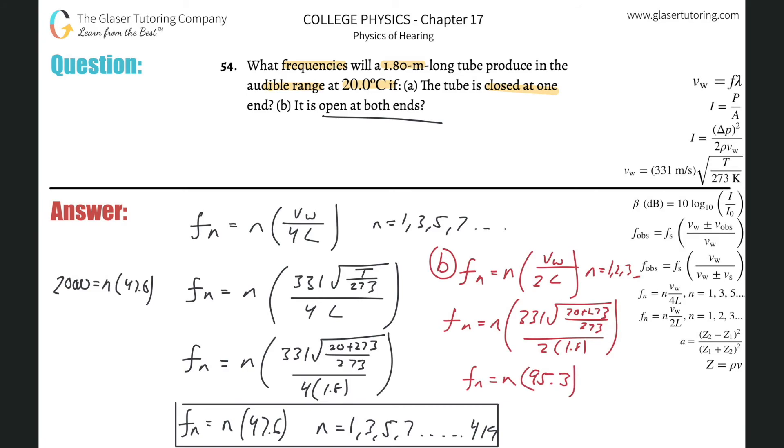And now we got to find, again, we got to solve for n basically. So plug in the max 20,000 hertz is equal to n times 95.3. Find the n value, so 20,000 divided by that value. So it's about 209.9, but again, round down. So n could be a max of 209.